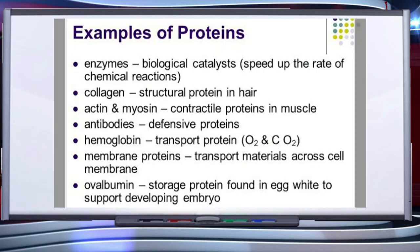Protein is considered a body-building nutrient. Examples of proteins include: enzymes, which are biological catalysts; collagen, a structural protein; actin and myosin present in muscles, which are contractile proteins; antibodies, which are defensive proteins; hemoglobin, a transport protein for transportation of gases; membrane proteins that transport materials across the cell membrane; and albumin, a storage protein found in egg white to support the developing embryo.